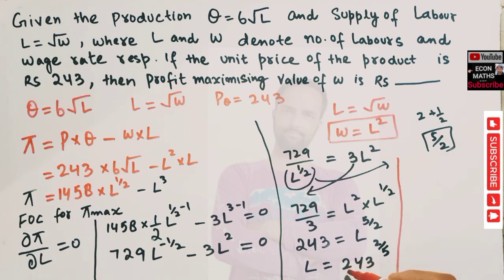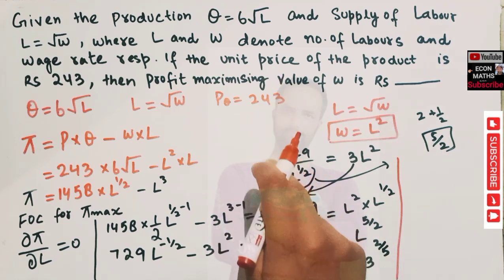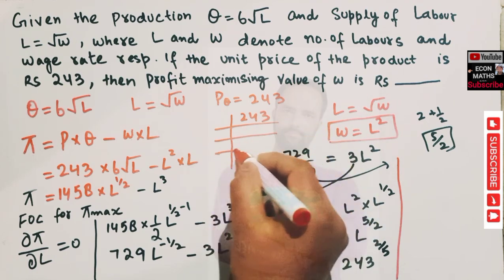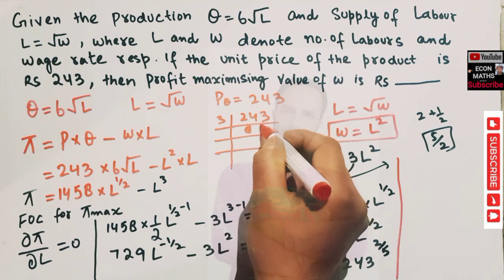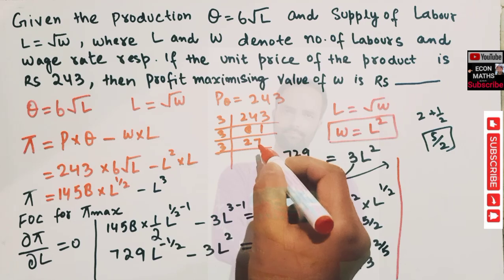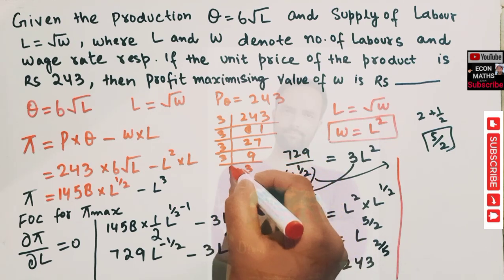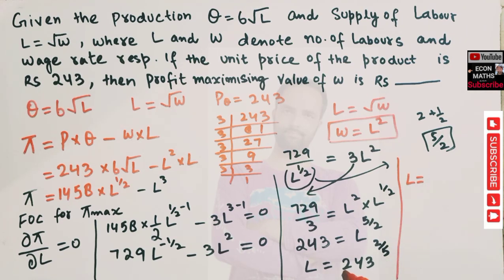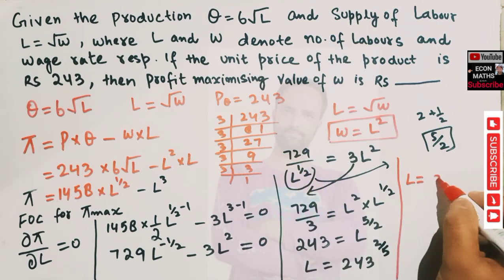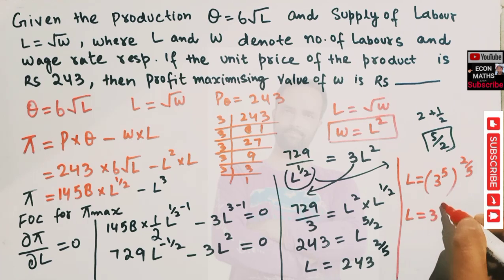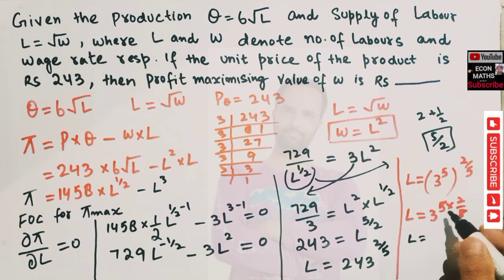Taking prime factors of 243: 243 = 3 × 3 × 3 × 3 × 3 = 3⁵. So L = (3⁵)^(2/5). The exponents 5 and 5 cancel, giving L = 3² = 9. The profit-maximizing number of laborers is 9.